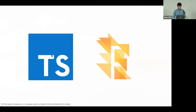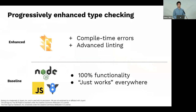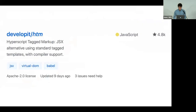This is a great example of progressive enhancement in this context. We have a baseline where everything works as expected — copy-paste it anywhere and it runs with full functionality. Then we add a layer on top that gives us compile-time errors and super-powered linting. TypeScript doesn't support this, but it's a really cool feature of Flow that provides a lot of benefits.